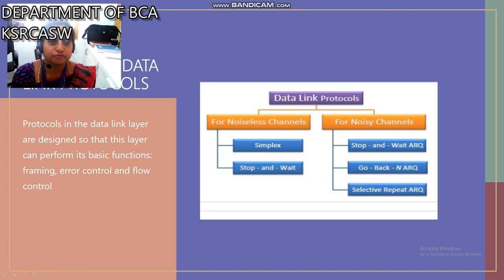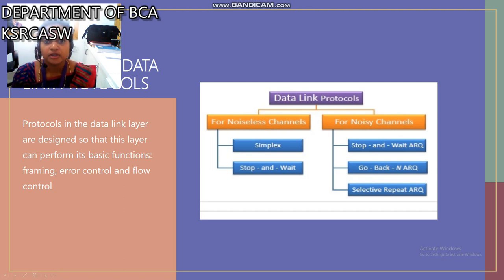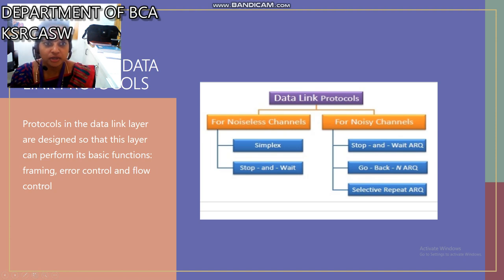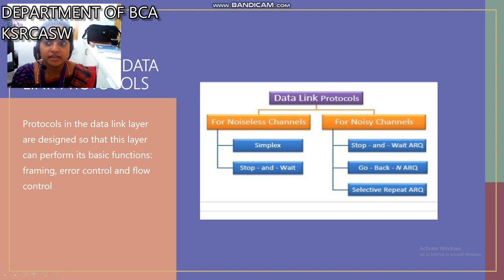Data link protocols are designed so that the data link layer can perform its basic functions: framing, error control, and flow control. These data link protocols have two types: the first is noiseless channel and the second is noisy channel. In the noiseless channel we have two subtypes: simplex stop-and-wait. In the noisy channel: stop-and-wait, go-back-N, and selective repeat.